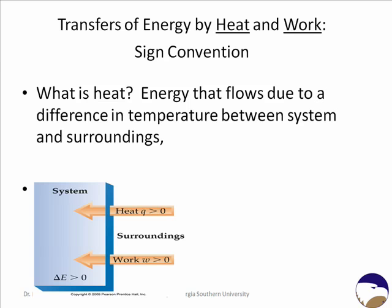We now know that systems have a certain amount of internal energy, and the total amount of internal energy in a system is affected by the flows of energy that may occur. Energy can flow in the form of heat or work. To keep track of the total change in internal energy of a system, we have to sum the heat that has moved and any work that has moved. How do we decide when Q is positive or negative, and similarly whether work is positive or negative when we put it into the equation?